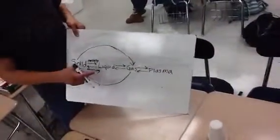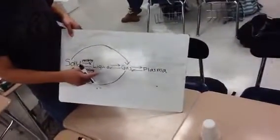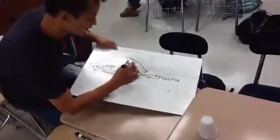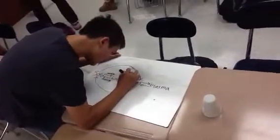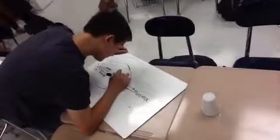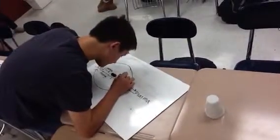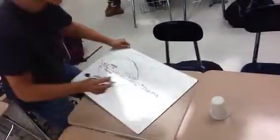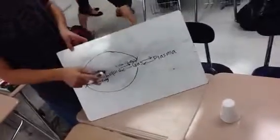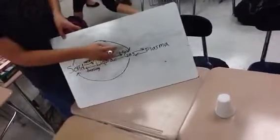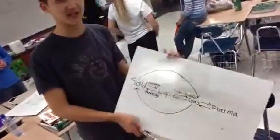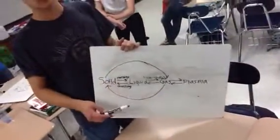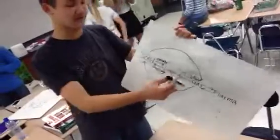Alright, the change from a liquid to a gas is vaporization. The two different kinds of vaporization are boiling, when it vaporizes from the bottom and rises up to the top because it's hot, and evaporation, where it just goes off from the top.